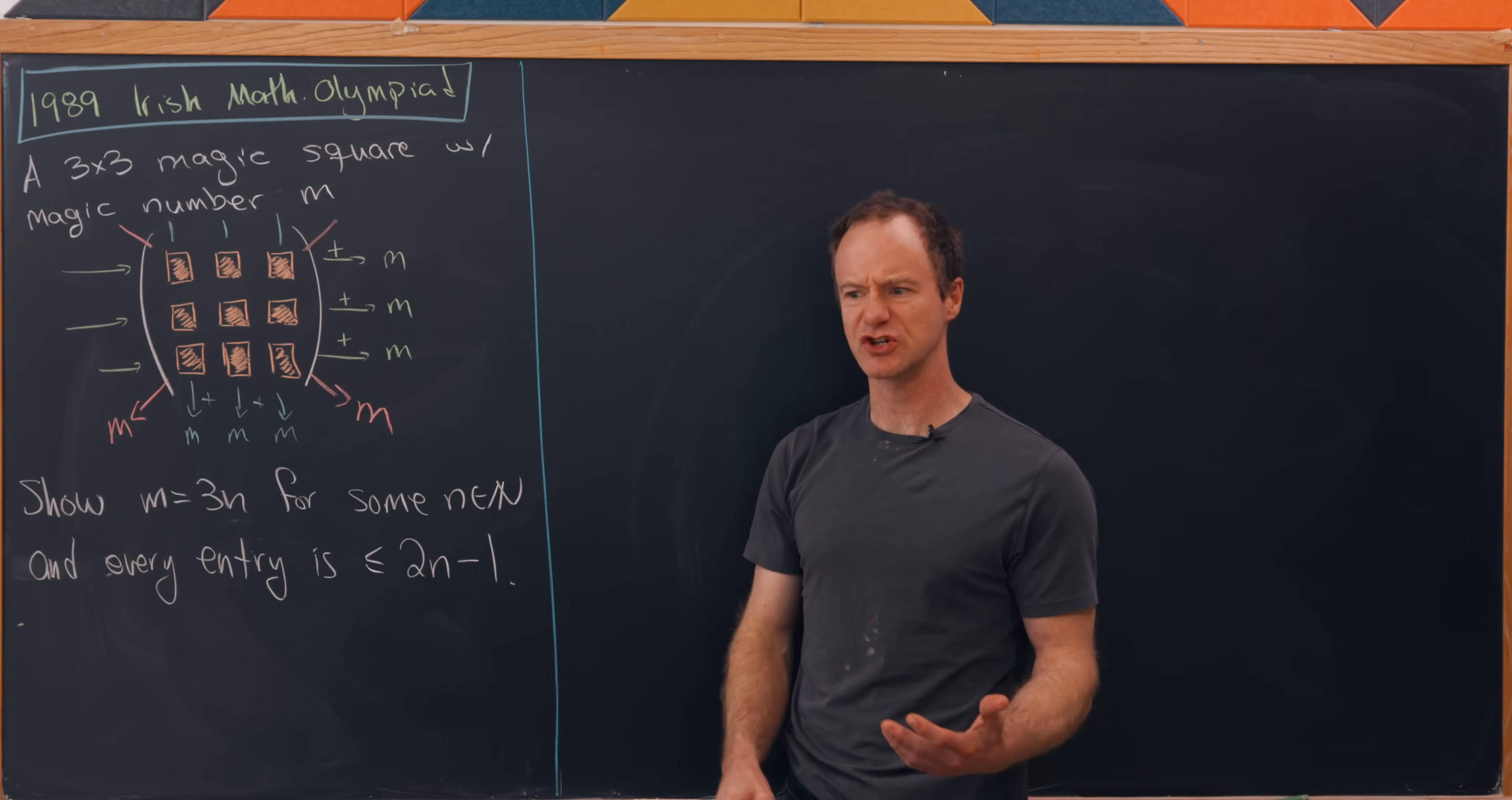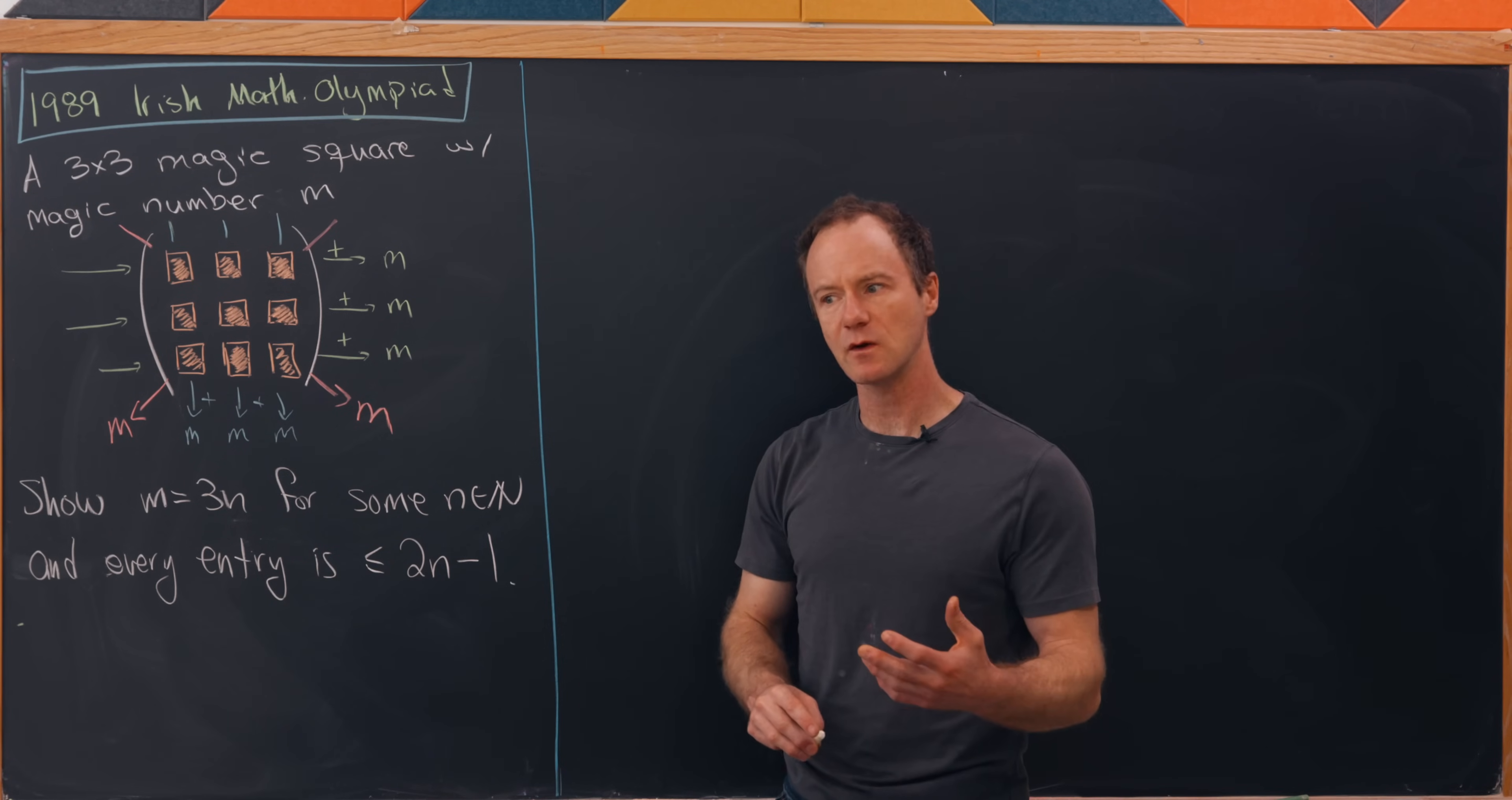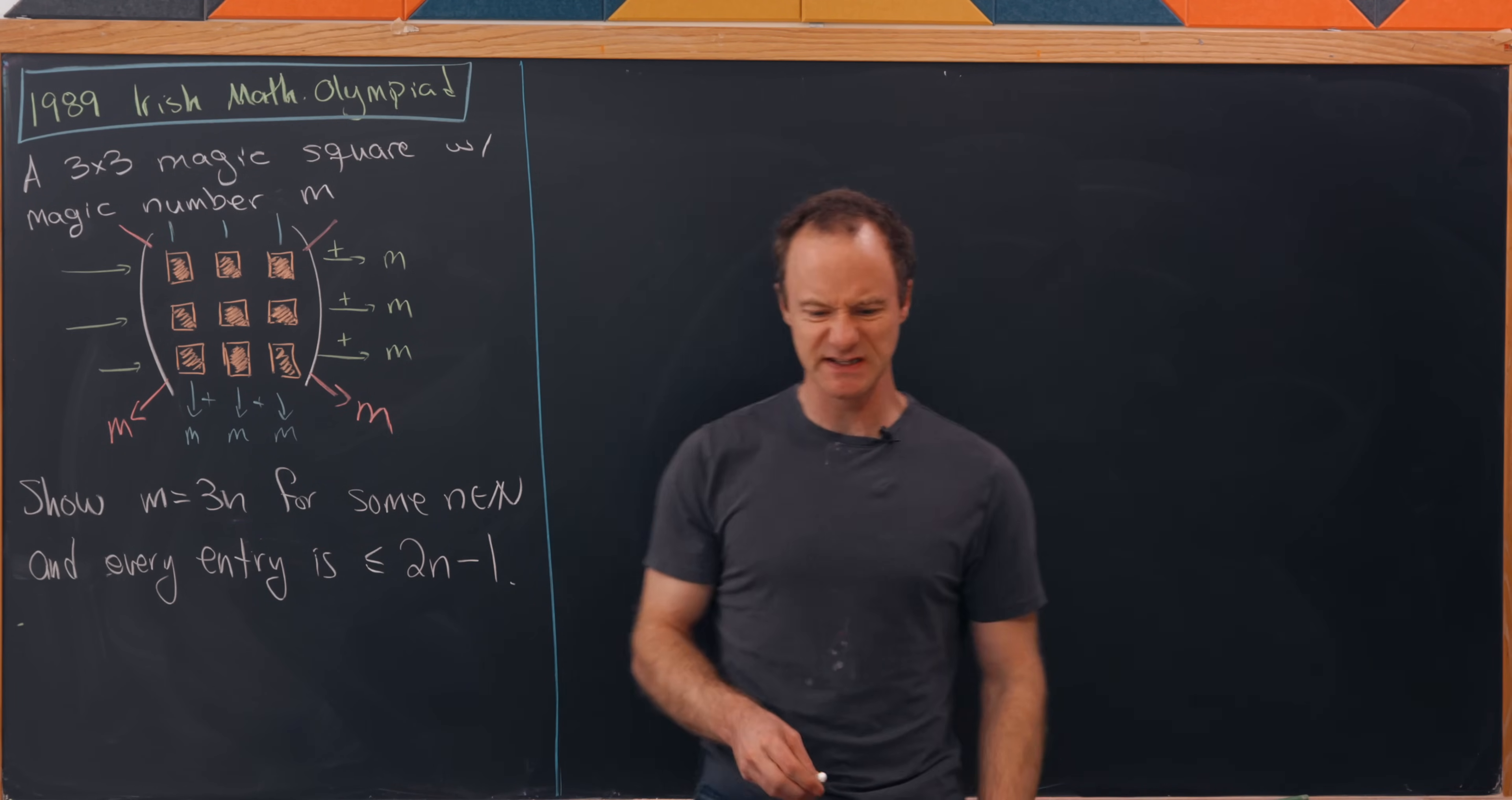Our goal is to show that m must be divisible by 3, or otherwise known as a multiple of 3, or maybe even better m equals 3n for some natural number n. And then we'll follow that up by showing that in this setup every entry is less than or equal to 2n minus 1.